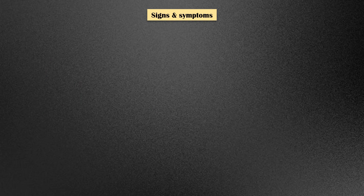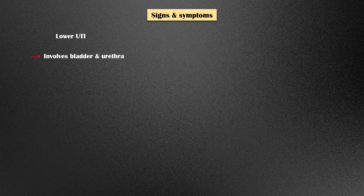Urinary tract infections can be divided into two according to the site of the urinary tract involved. Lower urinary tract infections involve the bladder and the urethra, whereas upper urinary tract infections mainly involve the kidneys, which is known as pyelonephritis.